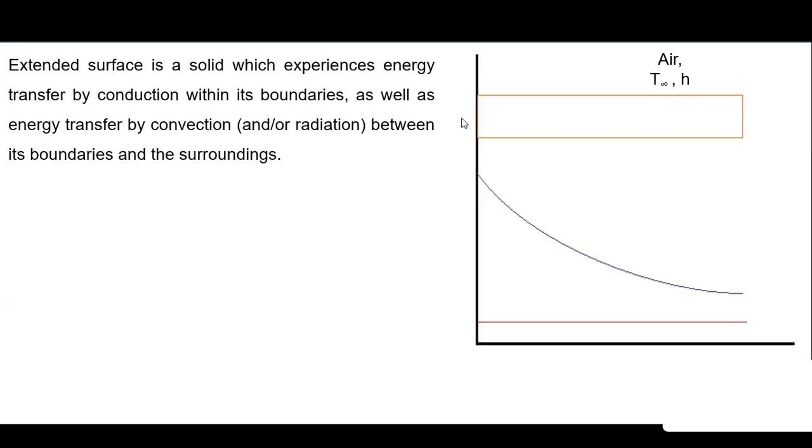If the base surface is at a higher temperature compared to the fluid, there is conduction from the base surface into the fin material, and at the same time heat is convected from the outer surface of the fin. So two things happen: energy transfer by conduction within the boundaries, and energy transfer by convection between the boundaries and the surrounding. Such a surface is called an extended surface.